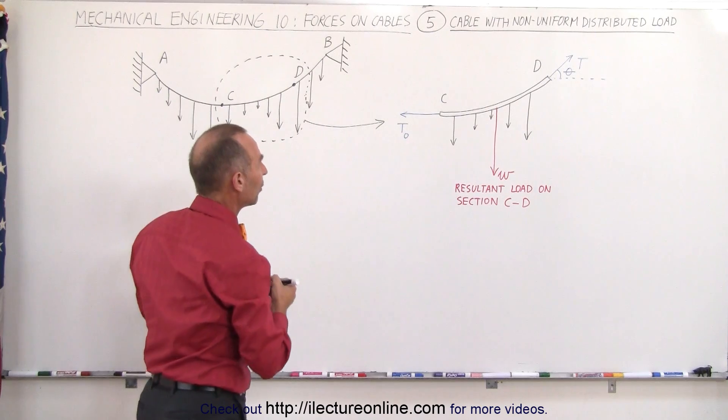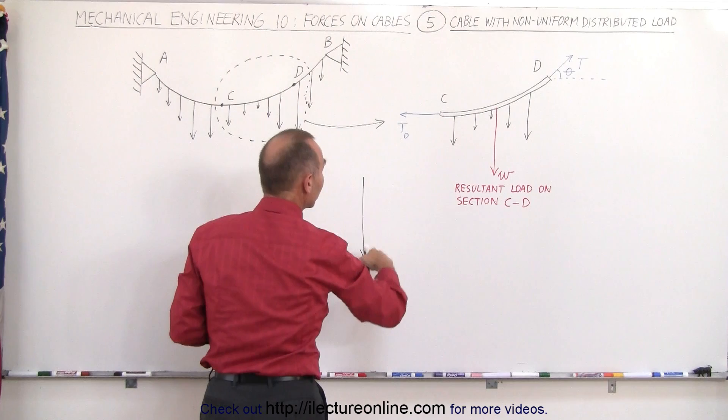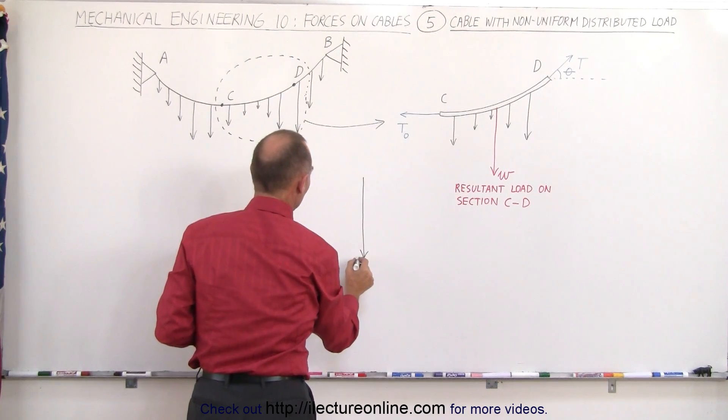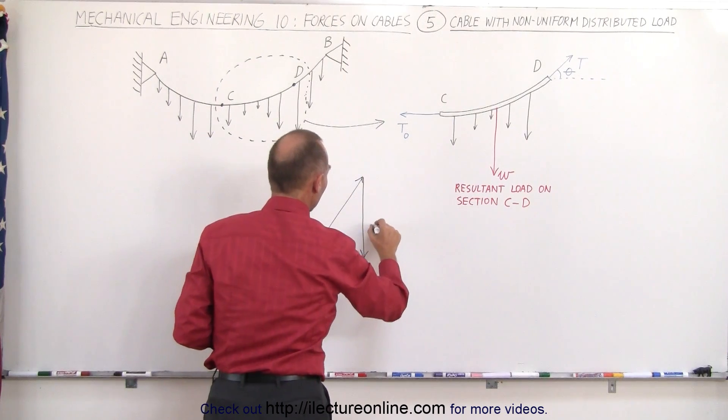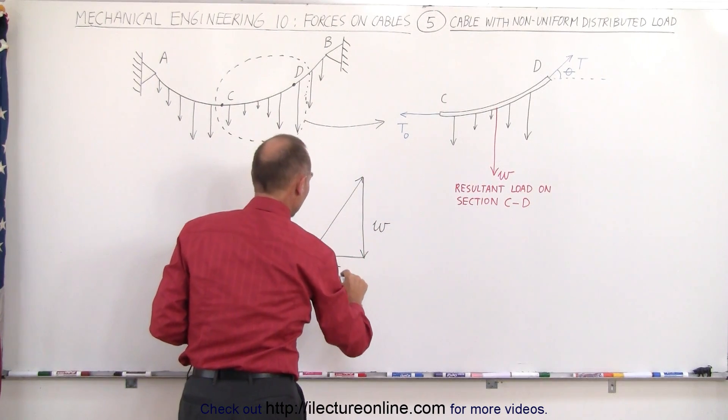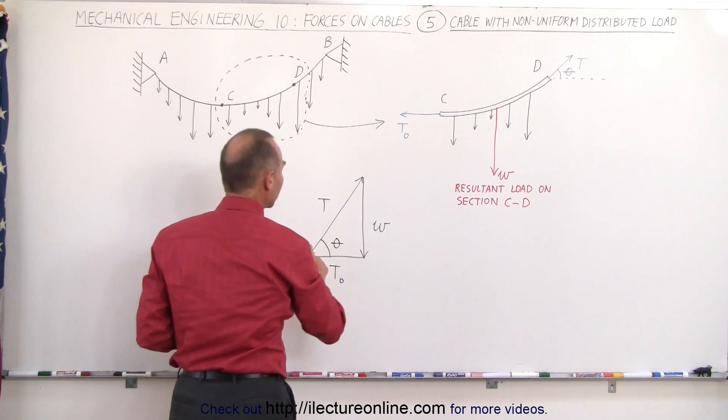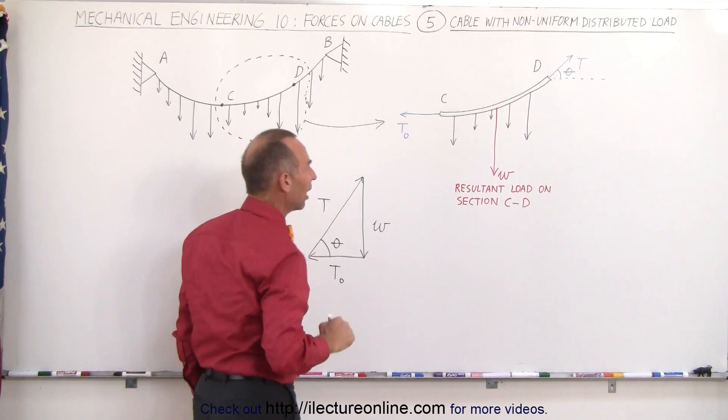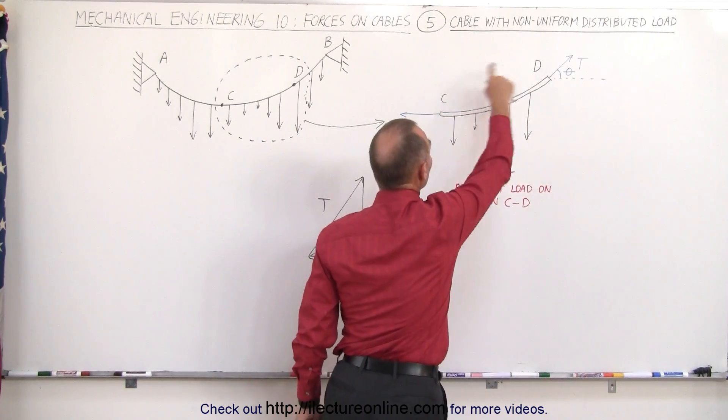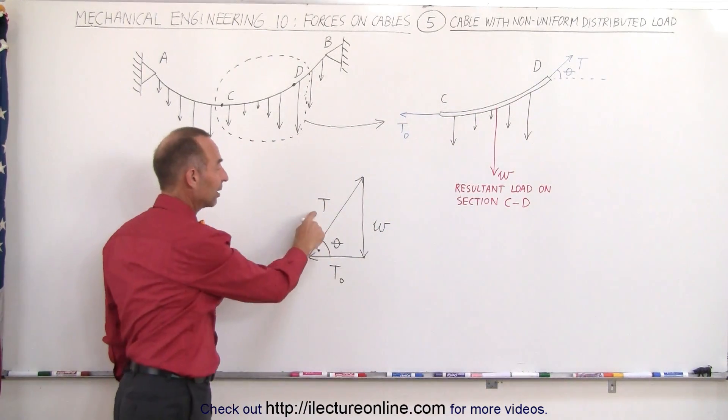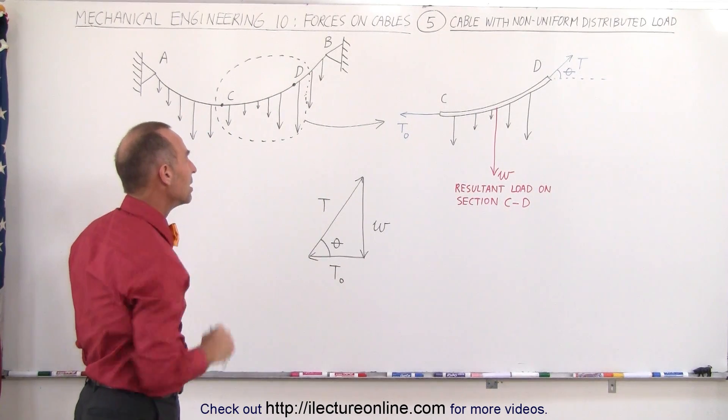If we then draw these three forces, they will look as follows. So we have the load force W in this direction, we have T sub zero in this direction, and then we have the force T in this direction. This becomes W, this here is T sub zero, and this here is T, and this angle right here is the angle theta between T and the horizontal line. So that's what we've done. We've done a vector sum of these three forces, and that's what it looks like, of course, realizing that these three are indeed vectors.